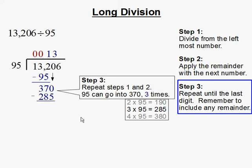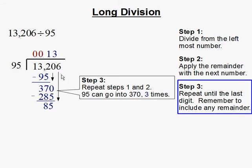Then we subtract. 370 subtract 285 gets you 85. Then we bring down our next number, 6. So that gives us 856.